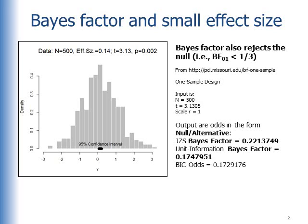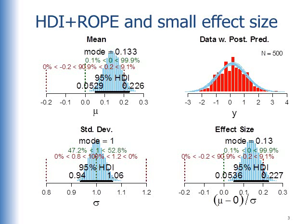The Bayes factor is computed from a very handy calculator provided at Jeff Rauter's website. Now if we do the HDI ROPE technique on these very same data, in the lower right we see an explicit posterior distribution on the effect size. We get this explicit estimate, and we can see that there's a tiny effect size. Even though the posterior distribution seems to be off of zero, compared to a modest rope, it overlaps the rope quite extensively. Therefore, we would not reject zero, because most of the posterior distribution is practically equivalent to zero.